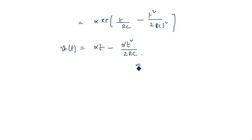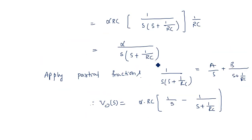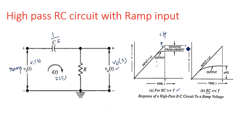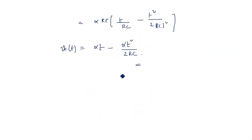We have seen what happens when RC is very small or very large compared to the input signal period. Now we need to calculate the deviation between input and output, which is the error. The error is the deviation we observe from the input signal to the output waveform.